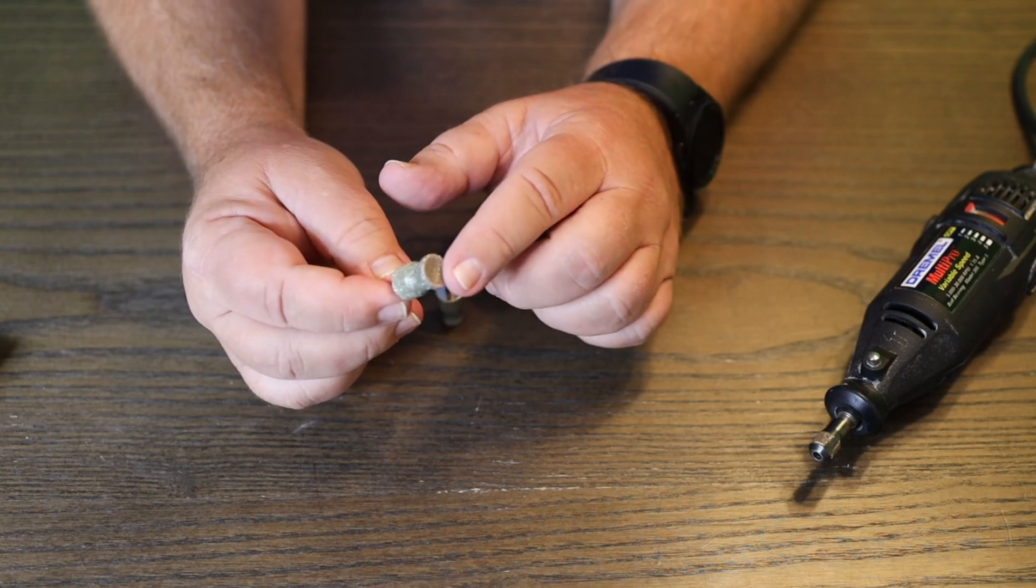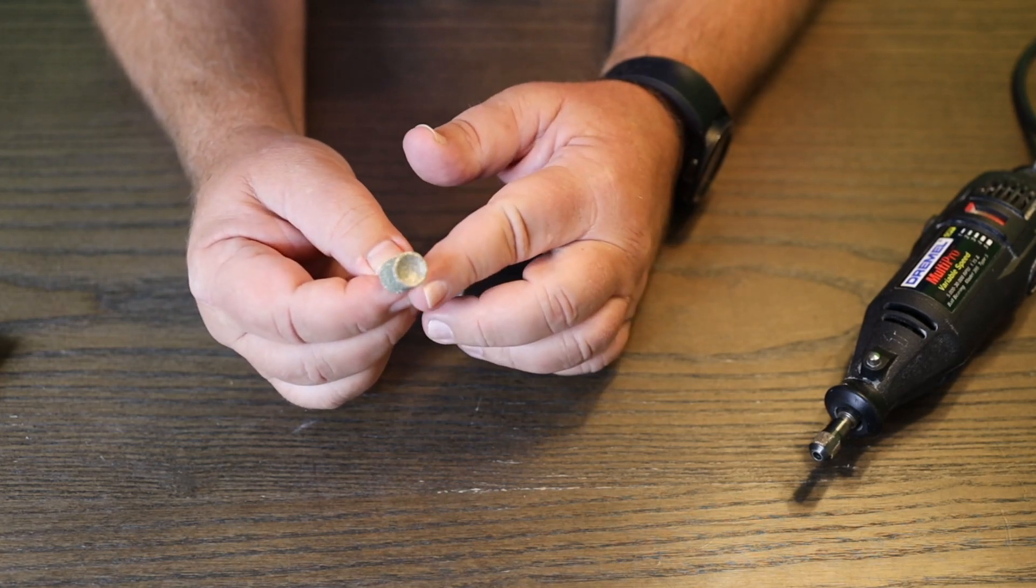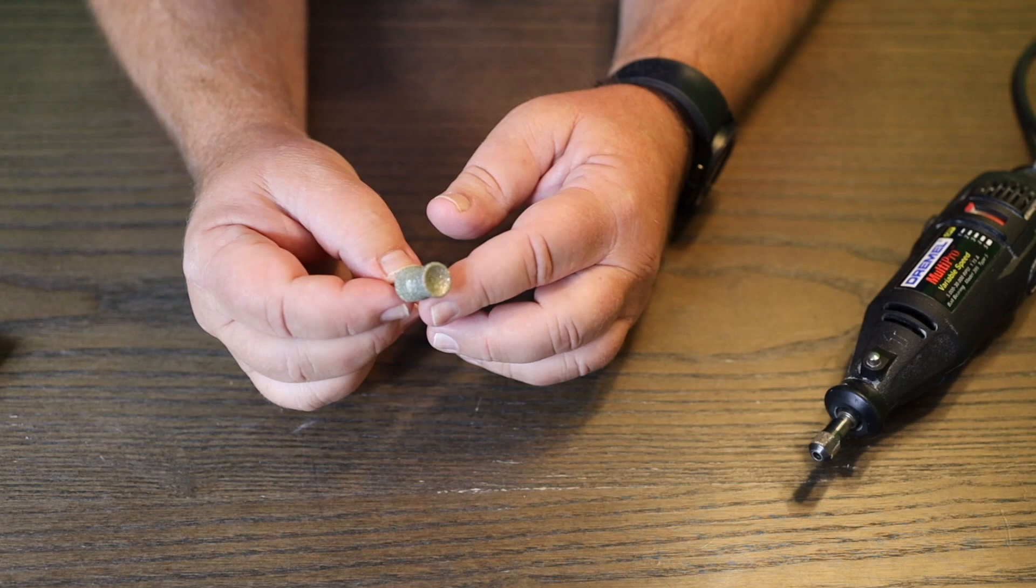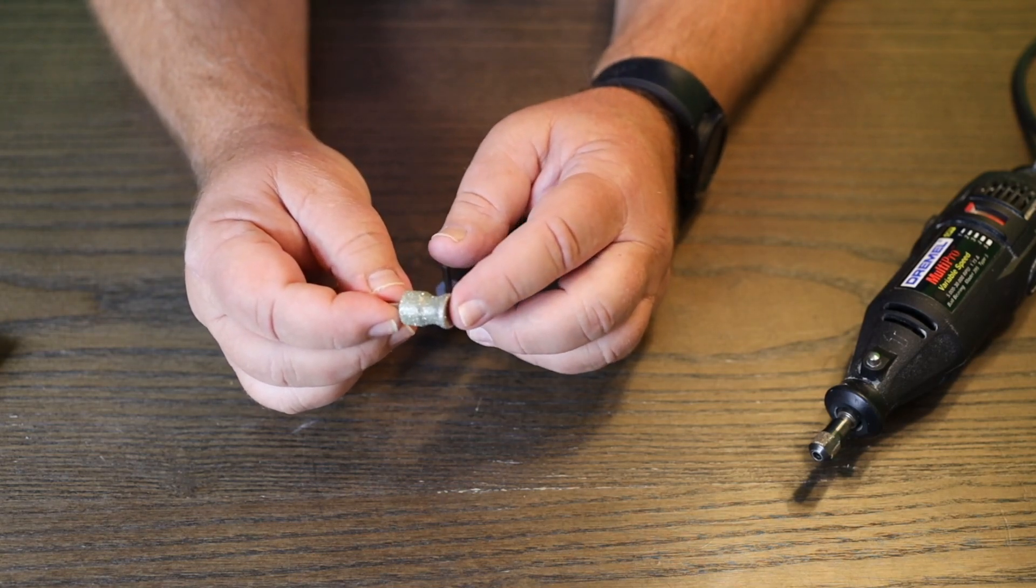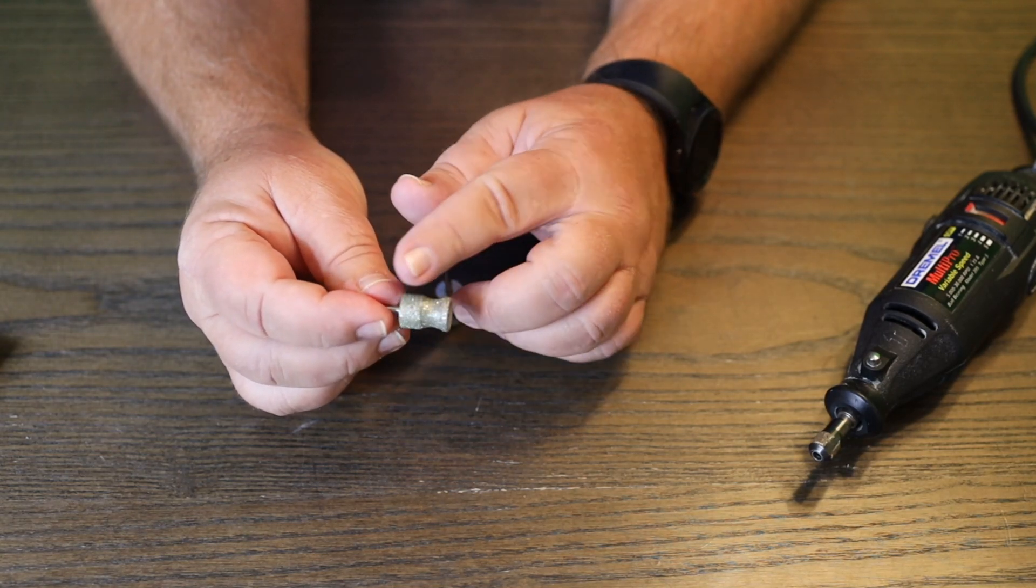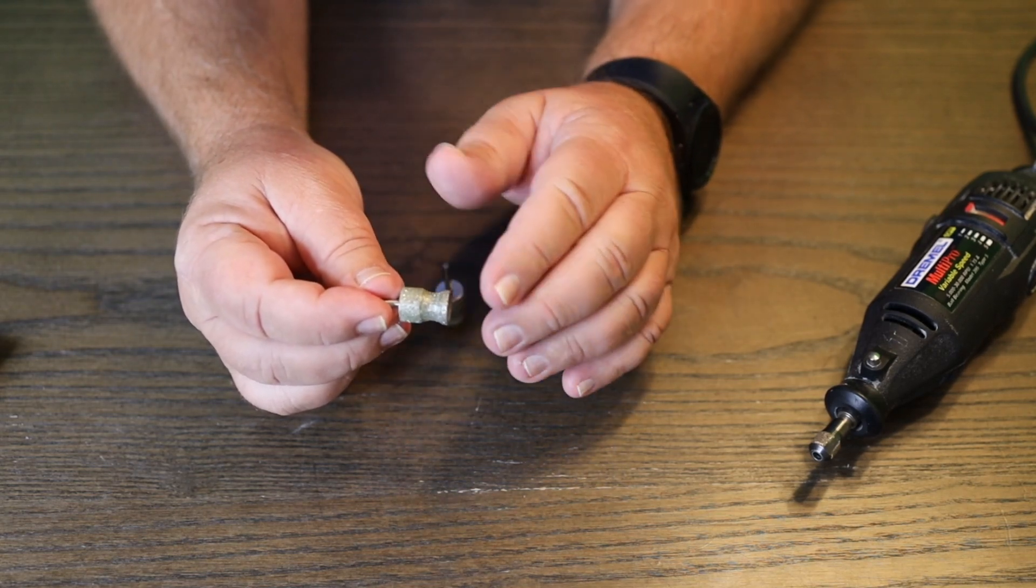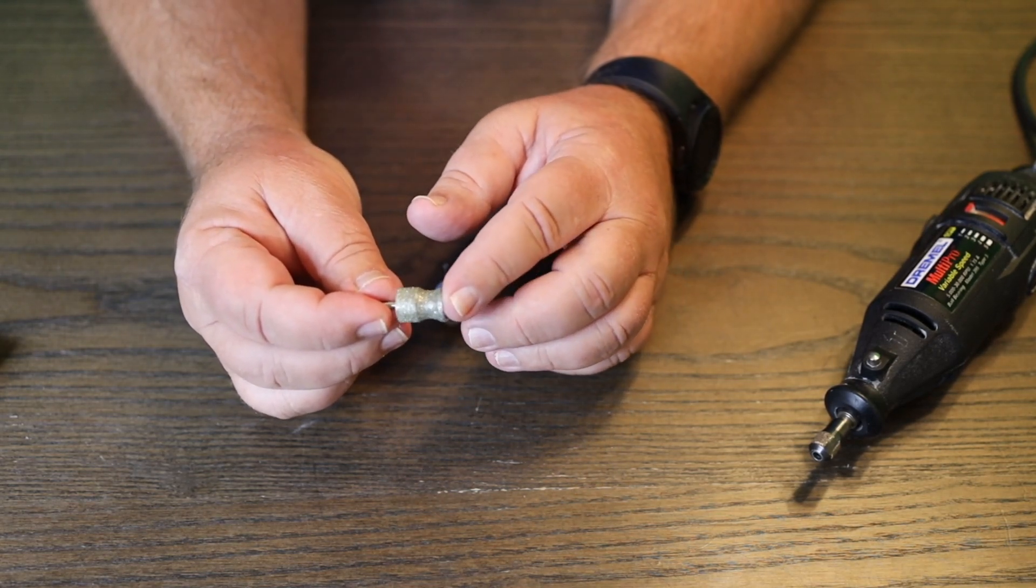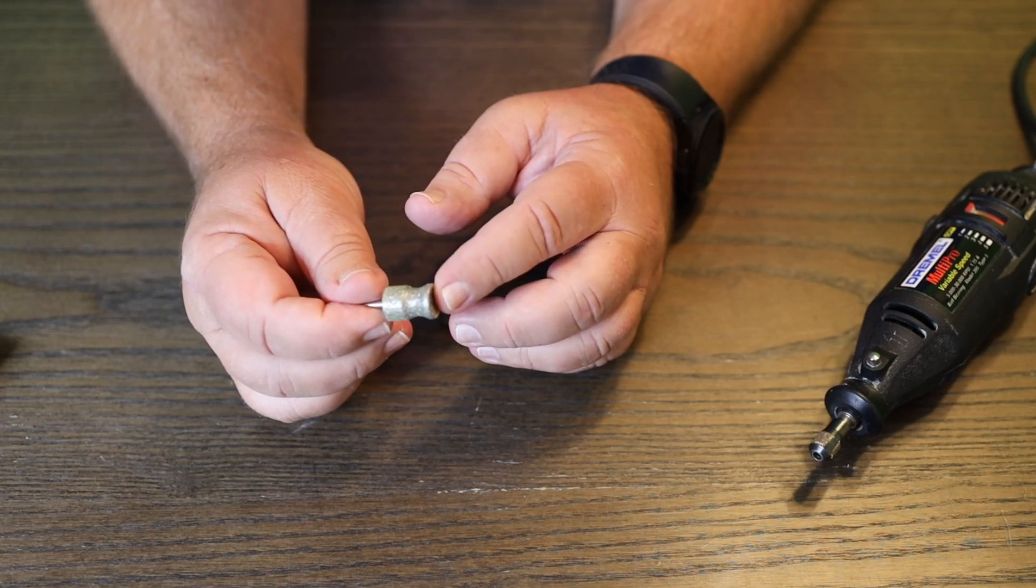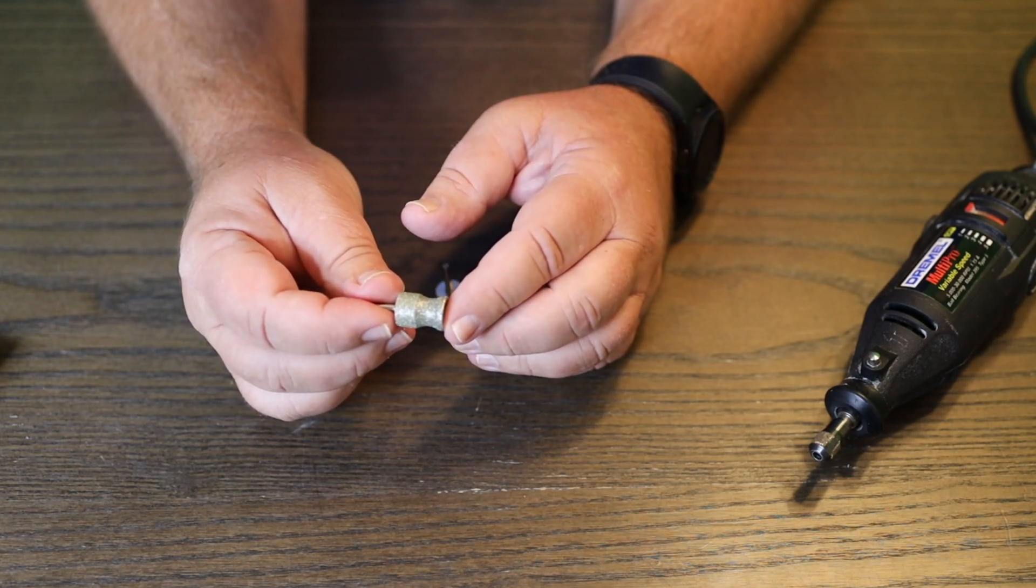Also, on this end right here, it's got a divot in there as well. Very strong. This particular one is a 120. It's designed to be a little smoother and pretty much designed for anybody to use. You attach it onto your Dremel.